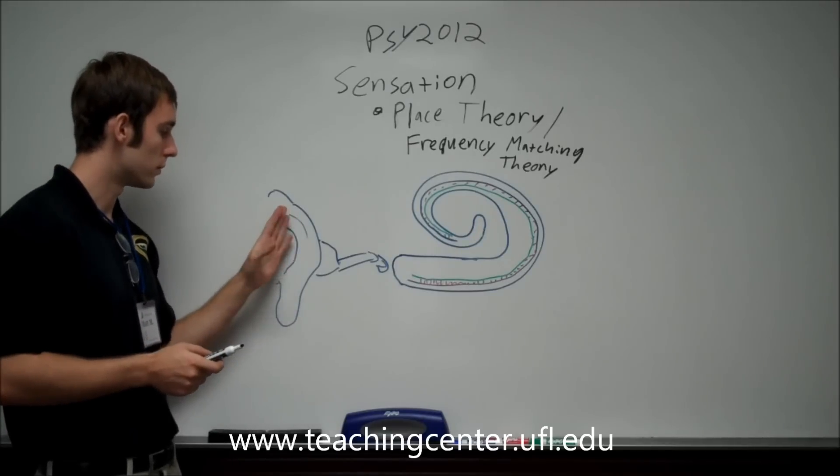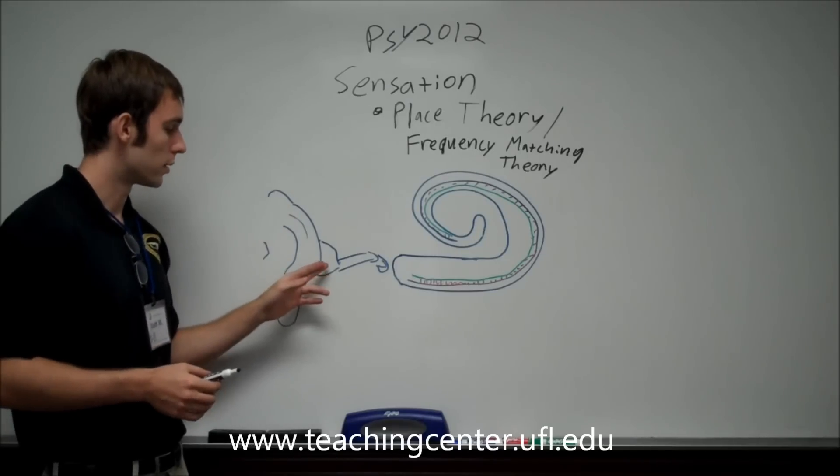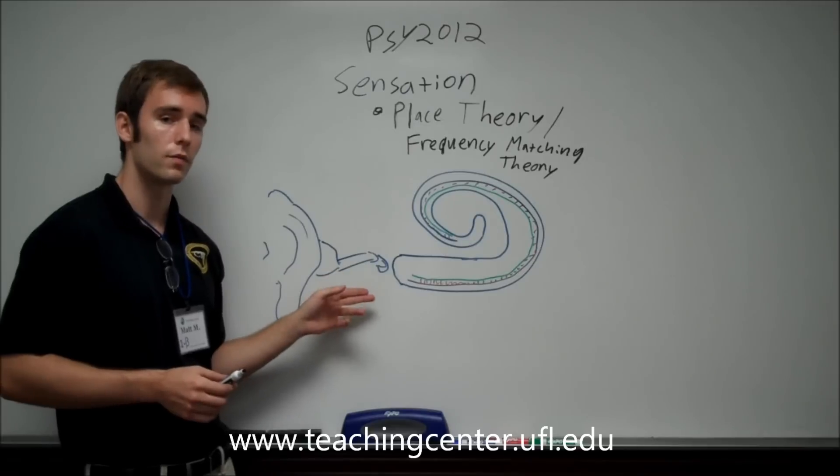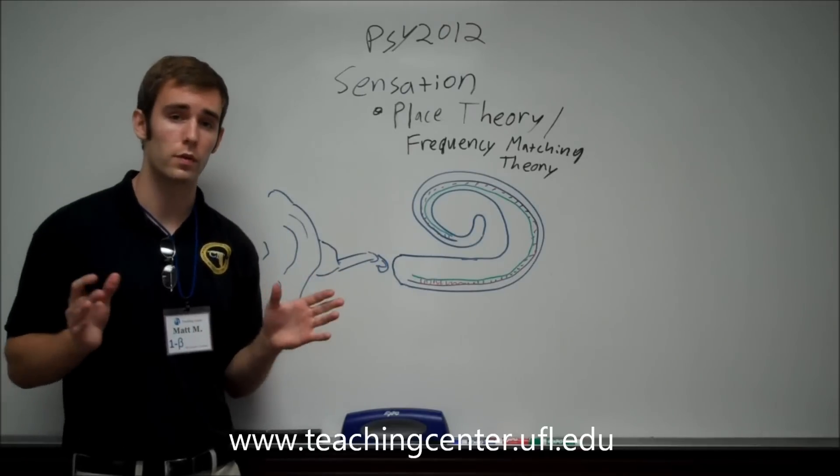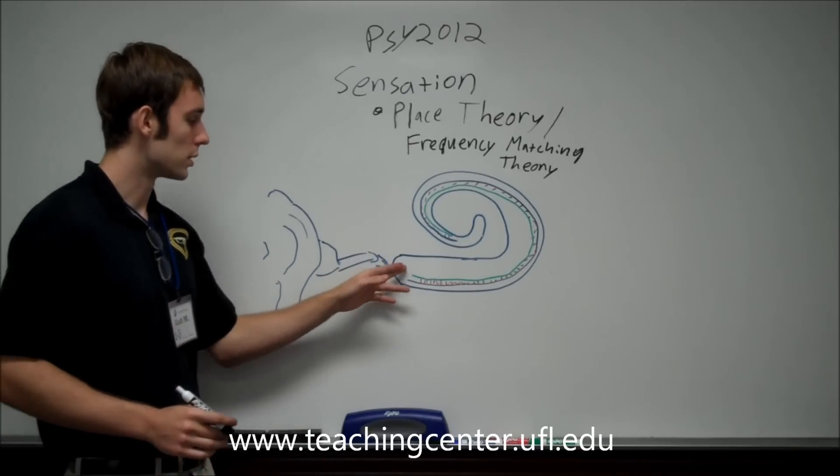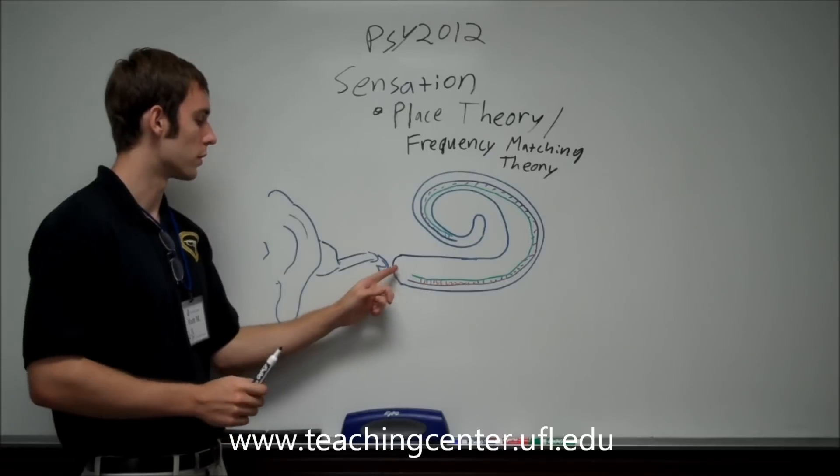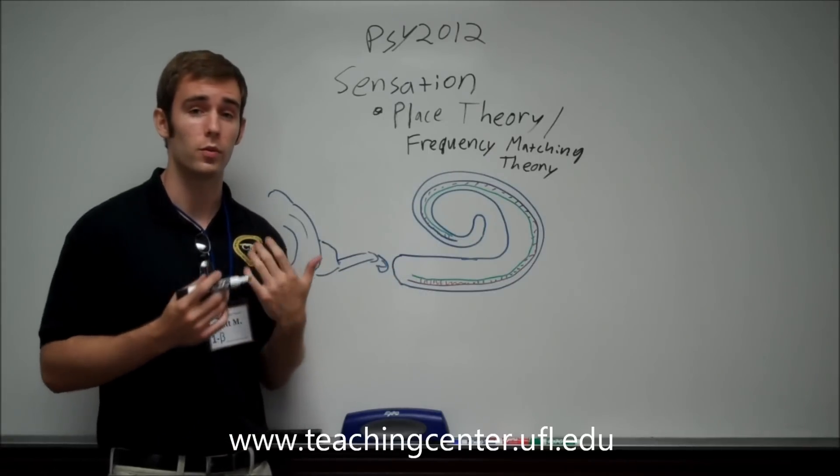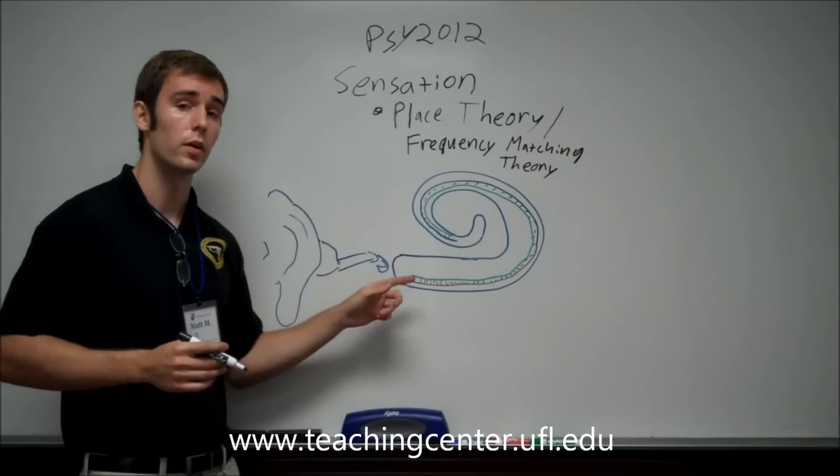Here we have the ear, the hammer, stapes, and anvil. I know it sounds like an old western or something. It's connected here to the cochlea through a little window, which unfortunately I'm unable to draw. I just know there's a little window here.